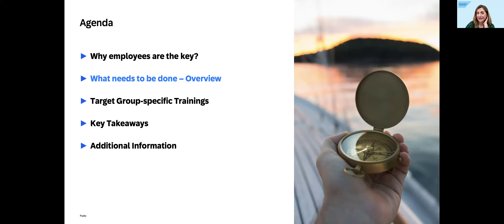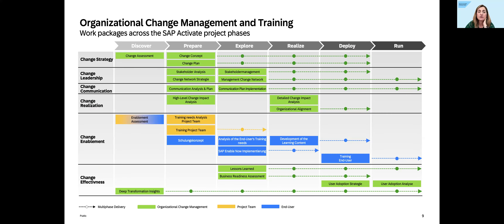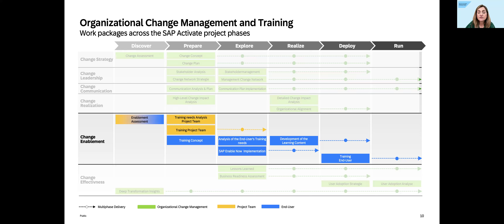What needs to be done? The next slide shows an overview of everything related to organizational change management and training in an implementation project. You see here six dimensions: change strategy, change leadership, change communication, change realization, change enablement — which means training — and also change effectiveness. Today I will concentrate on the training part. You can also see a color-code focus: end users in blue and project team in yellow. I will go deeper into that a little bit later.